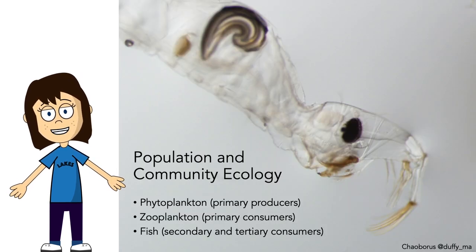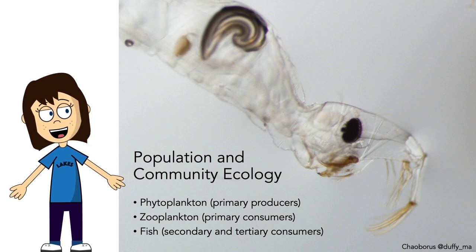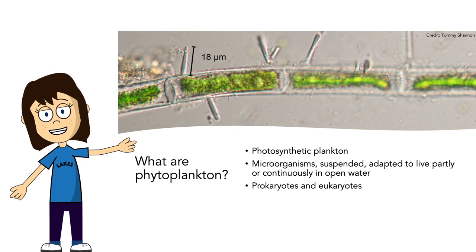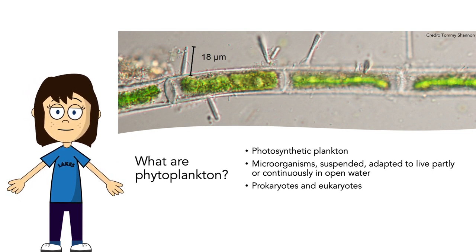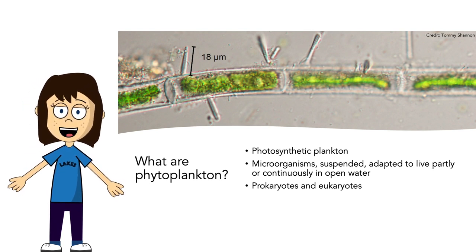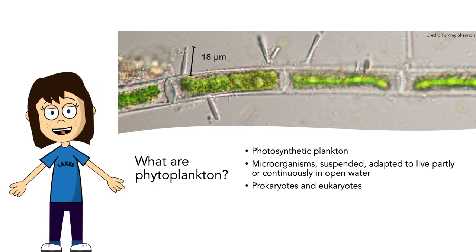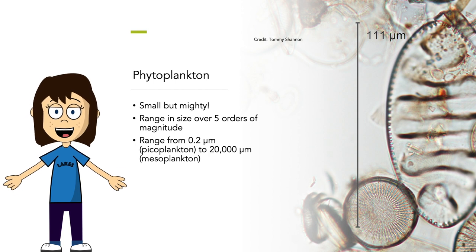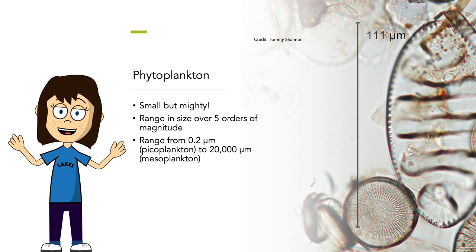To better understand population and community ecology in Lake Mendota, it's important to understand the basics of phytoplankton (the primary producers), zooplankton (the primary consumers), and fish (secondary and tertiary consumers). Phytoplankton are photosynthetic microorganisms suspended and adapted to live in open water. While we often think of phytoplankton as algae, they are both prokaryotes and eukaryotes — we have cyanobacteria, which are photosynthetic microbes that make up a large proportion of phytoplankton in some lakes. Phytoplankton range in size over five orders of magnitude, from less than 0.2 micrometers to 20,000 micrometers in size.